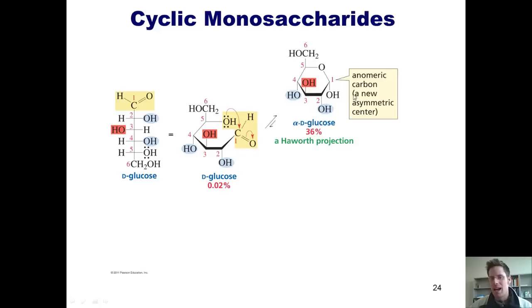It doesn't show us equatorial or axial. Instead, it shows us up and down. You can notice once again that all of the OHs that are pointing to the right over here in glucose along this main carbon spine are pointing down in the Haworth projection and the one OH that's pointing to the left in glucose is pointing up.